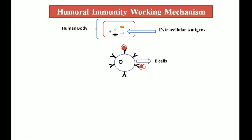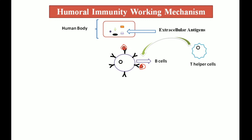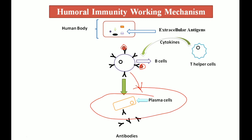After binding, the B cell requires help from T cells, so helper T cells come into action. With the help of helper T cells, some cytokines are secreted — cytokines are chemical signals that helper T cells secrete. These cytokines transform the B cell into a plasma cell, and the plasma cell produces antibodies. These antibodies then remove the pathogen by neutralizing it, and this is how humoral immunity works.